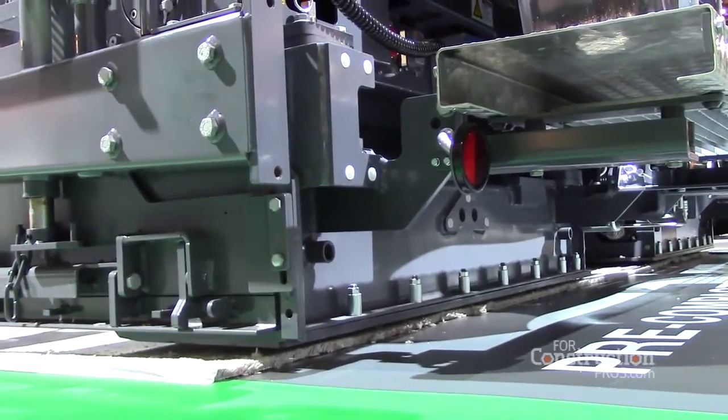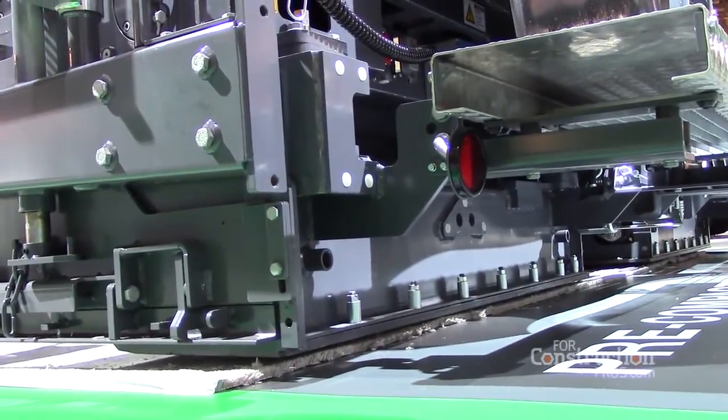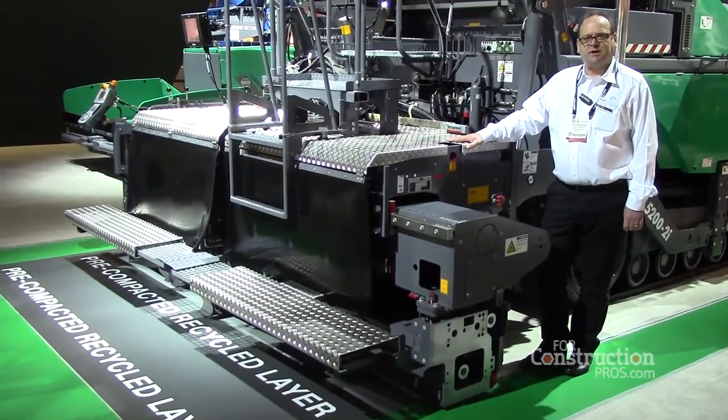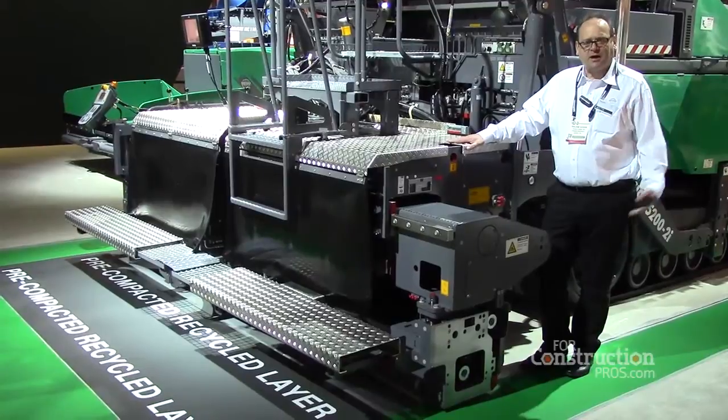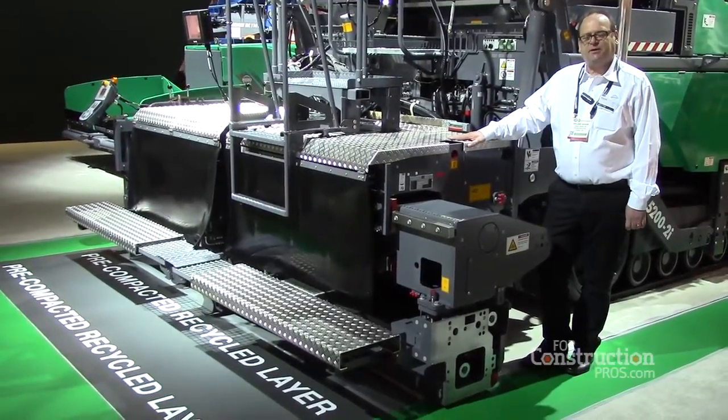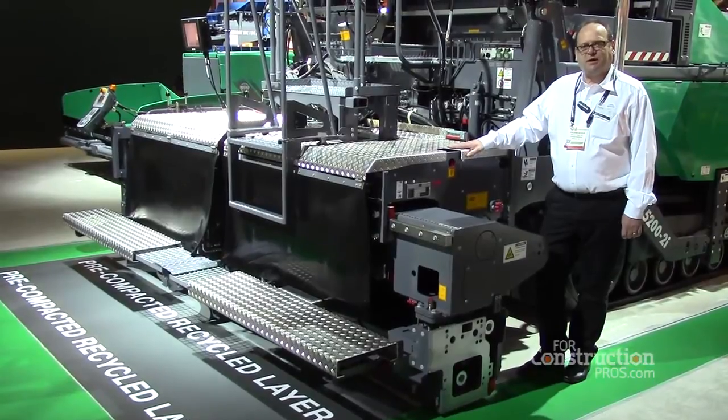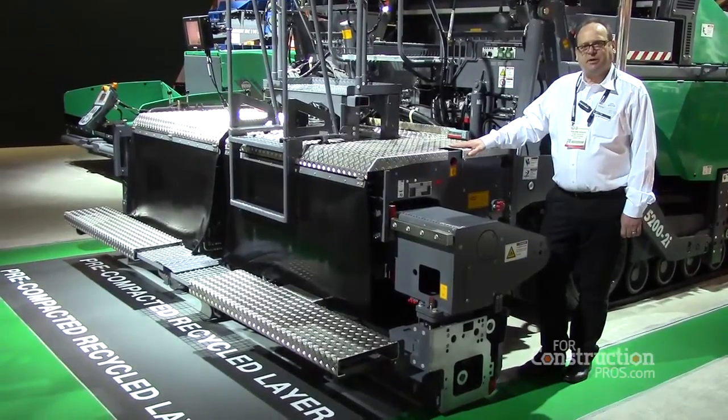We call it TB screed, and this tamper allows a very high compaction of the material. For special applications in asphalt business as well as for RCC pavements, it's a very good screed which allows higher compaction and better mat quality.